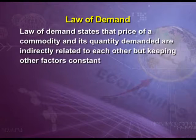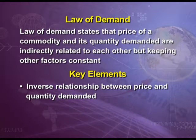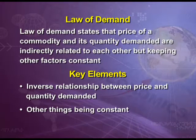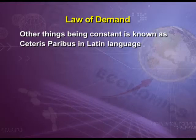Now, the law of demand. The law of demand states that price of a commodity and its quantity demanded are indirectly related to each other, keeping other factors constant. There are two key elements in this law: first, the inverse relationship between price and quantity demanded, and second, other things being constant. Inverse relationship means if price increases, quantity demanded falls, and if price falls, quantity demanded rises — it is human tendency to demand more when price is less. The second part, 'other things being constant,' is known as Ceteris Paribus in Latin.